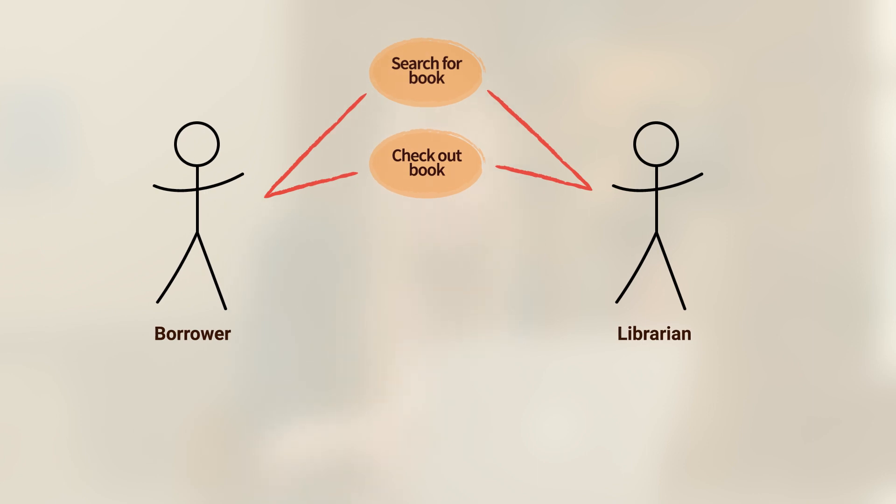Now accordingly, in my diagram, I don't actually need to connect a line from 'return a book' to the librarian, because as you can see in my textual use case, the borrower is the one who returns the book, and they return it directly to a drop box. No need for the librarian at this point. We'll look back at the diagram now and draw that line from the borrower to a use case that says 'return book.'